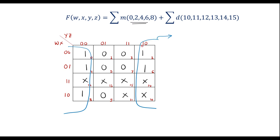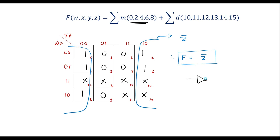The result for this group covers these two columns. The common factor is 0, which corresponds to z bar. So the simplified boolean expression is: output f is equal to z bar. To realize this using logic gates, I need only one NOT gate. Input is z, output is z bar, that is f equals z bar.